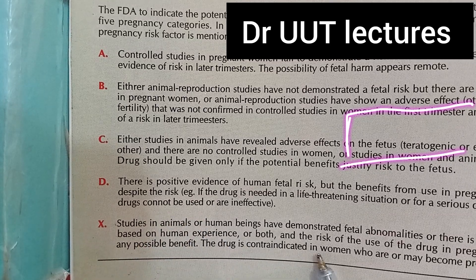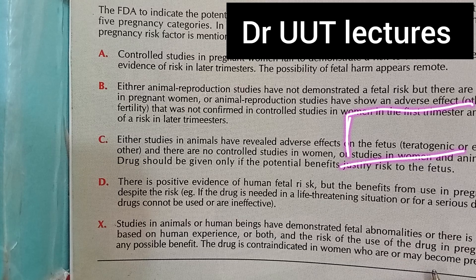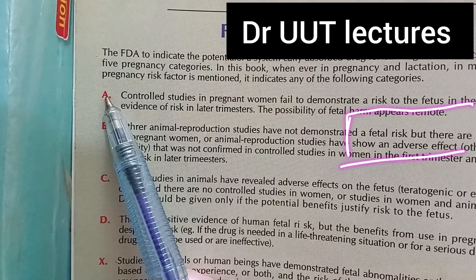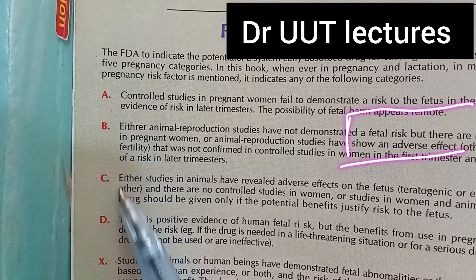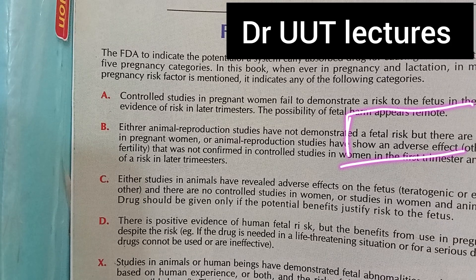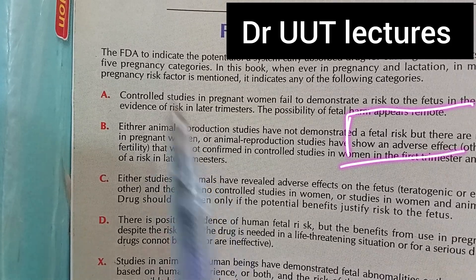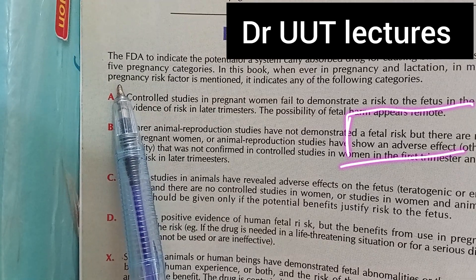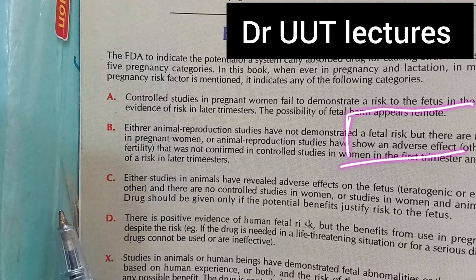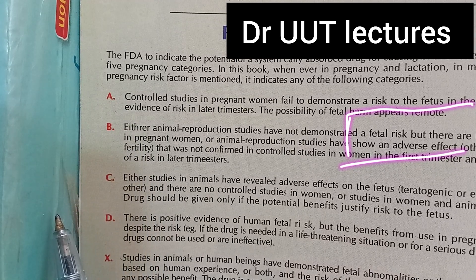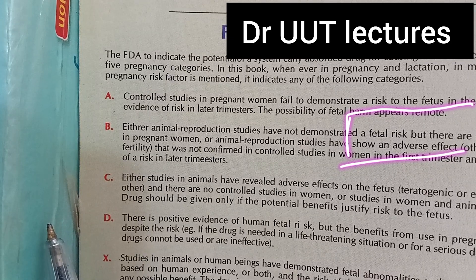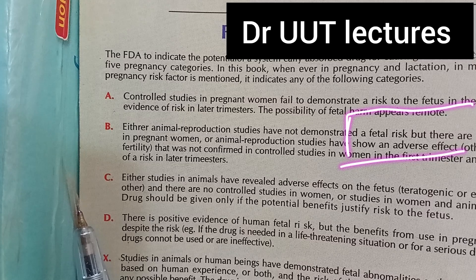Here is the point: the drug is contraindicated in women who are or may become pregnant. So X means no, and A can be taken. As you go downward, the risk of using that particular medication increases. Several risks are related to pregnancy. So for pregnant ladies and all those who are dealing with medications used in women, especially pregnant women, we should consider these points, especially the drug categories.